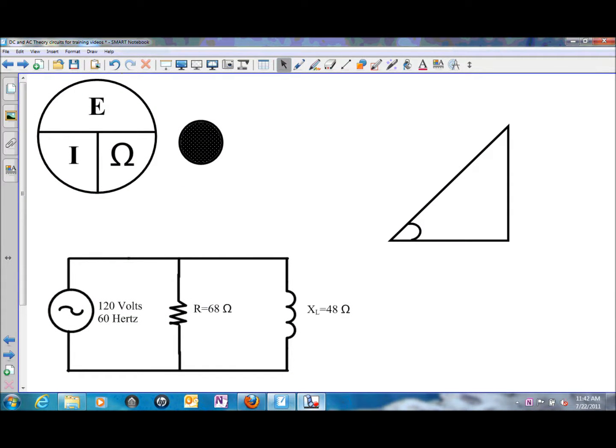In this presentation, we'll be solving for current in a parallel RL circuit. We have one resistor and one inductor in parallel with an AC power source, and voltage will be our reference. It is unchanging in a parallel circuit, so we're going to be solving for the current through each one of the branches.